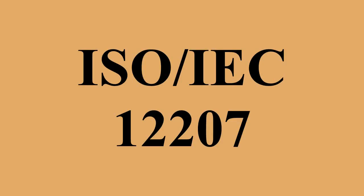The ISO/IEC 12207 Systems and Software Engineering – Software Life Cycle Processes is an international standard for software life cycle processes. It aims to be the standard that defines all the tasks required for developing and maintaining software. The ISO/IEC 12207 standard establishes a process of life cycle for software, including processes and activities applied during the acquisition and configuration of the services of the system. Each process has a set of outcomes associated with it.